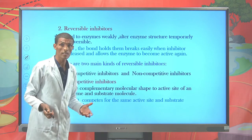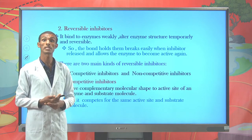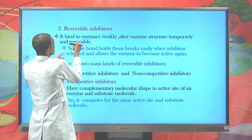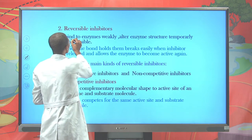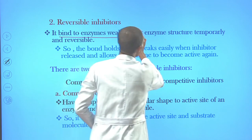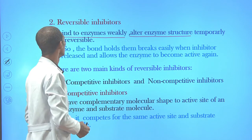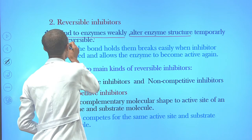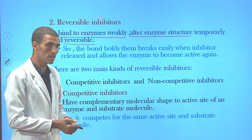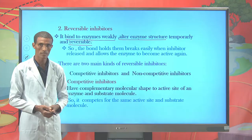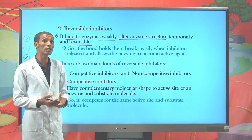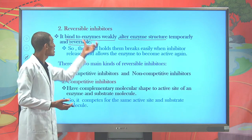In contrast to irreversible inhibitors, there is the reversible inhibitor. When we say reversible inhibitor, it is a substance that combines with an enzyme's active site in a weak manner. It can alter enzyme activity temporarily, and the action can be reversed when the inhibitor is removed. The bond created between this type of inhibitor and the enzyme active site is weak, so if the inhibiting substance is removed, the enzyme can regain its original catalytic activity. This type of inhibitor is said to be reversible.